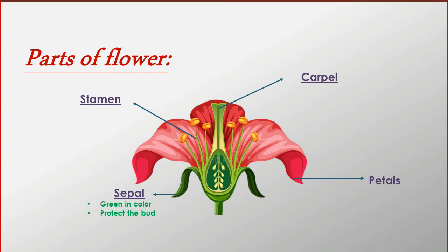The outermost part of the flower is called sepal. They are green in color and protect the bud from mechanical injury.